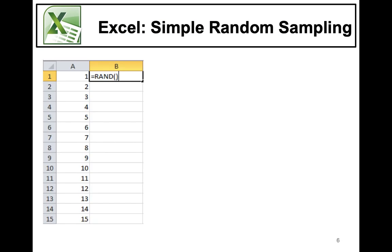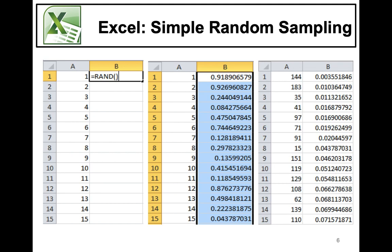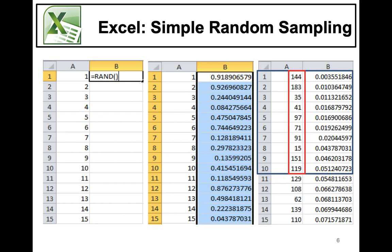In an empty cell, we're going to type equals RAND with empty brackets, and this will generate the first random number. When we double click, it will populate the rest of the column such that we have 200 random numbers. Now we have our column of random numbers and each population element has an assigned random number. We're going to fix these random numbers by clicking on the Formula tab, Calculation Options, and selecting the Manual option so that our values do not change once we've sorted. After we have sorted our random numbers, the first 10 smallest random numbers give us the first 10 students. The first student selected will be student number 144 and the 10th student in our sample will be student 119.